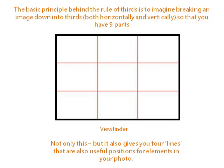The reason for this is there have been studies done showing that when we look at a photograph, we look at these four points automatically, and in a particular order. We look at the top left-hand corner first, then the bottom left-hand corner, then top right and bottom right — and roughly these percentages reflect how long we spend looking at each area.